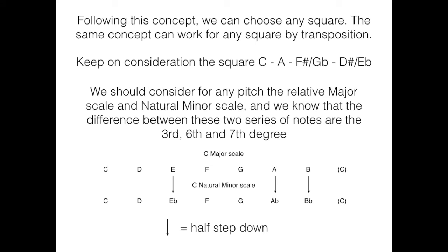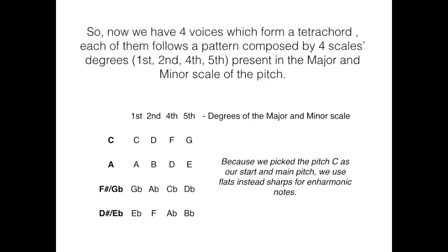Following this concept, we can choose any square. The same concept can work for any square by transposition. Keep on consideration the square C, A, F sharp, and Eb. We should consider for any pitch the relative major scale and natural minor scale, and we know that the difference between these two series of nodes are the 3rd, 6th, and 7th degree. So now we have 4 voices which form a tetrachord. Each of them follows a pattern composed by 4 scales degrees: 1st, 2nd, 4th, and 5th, present in the major and minor scale on the pitch.